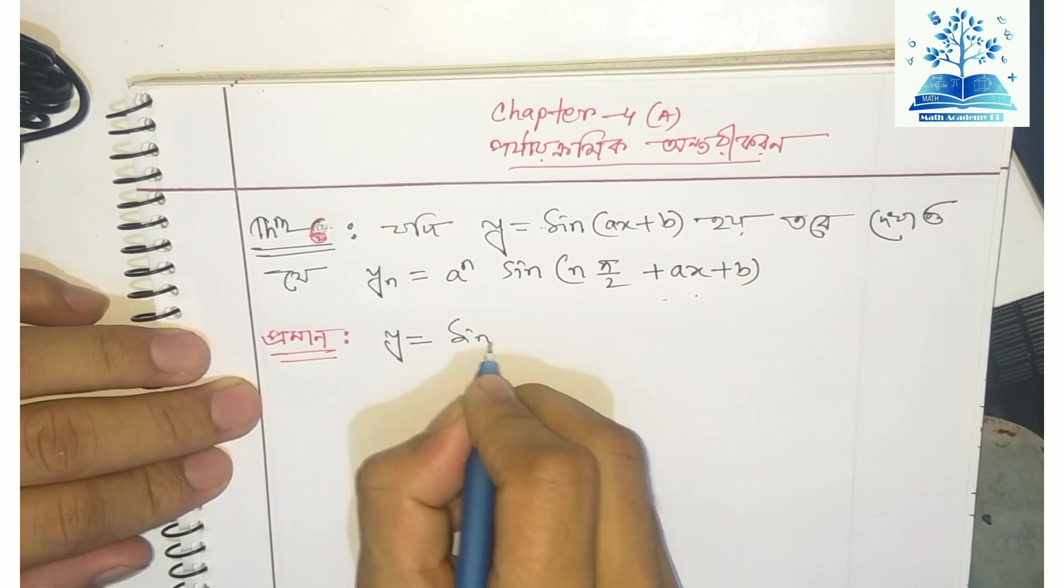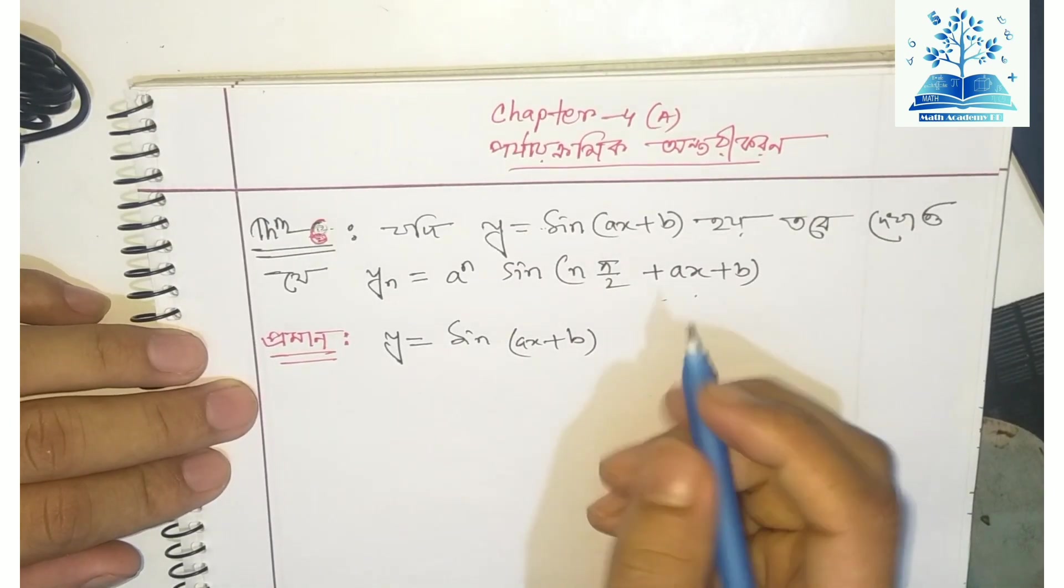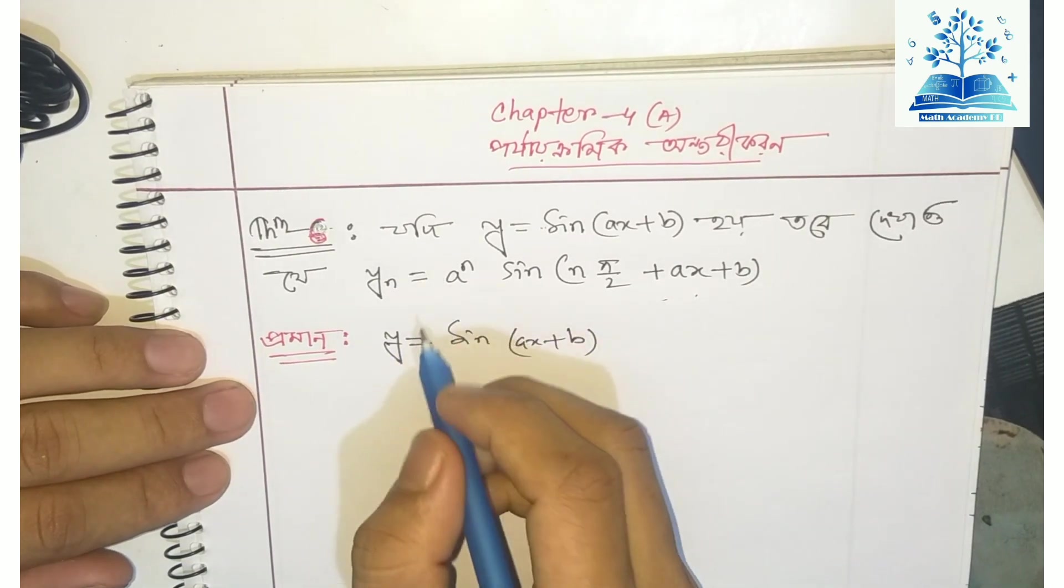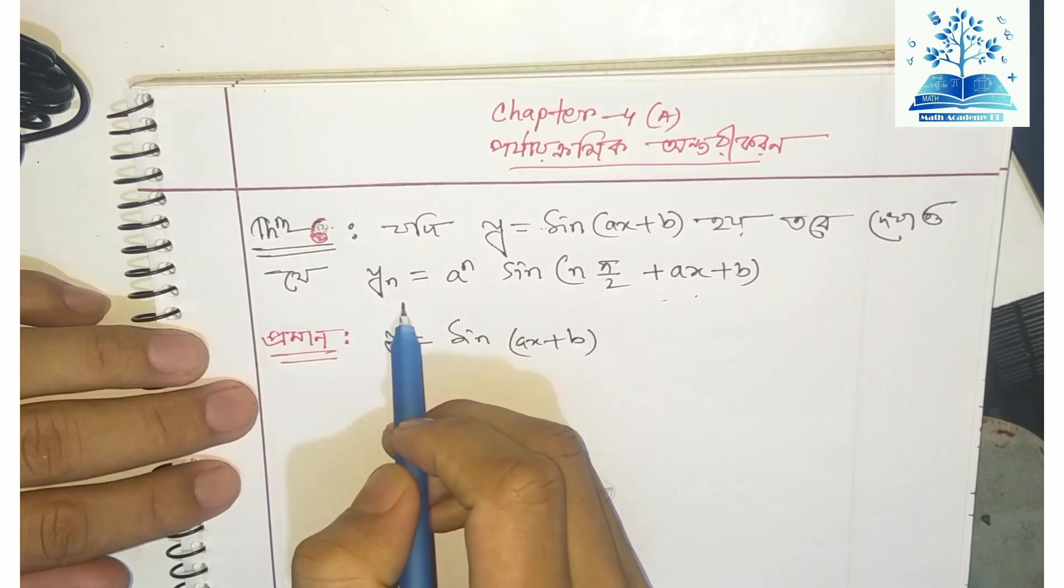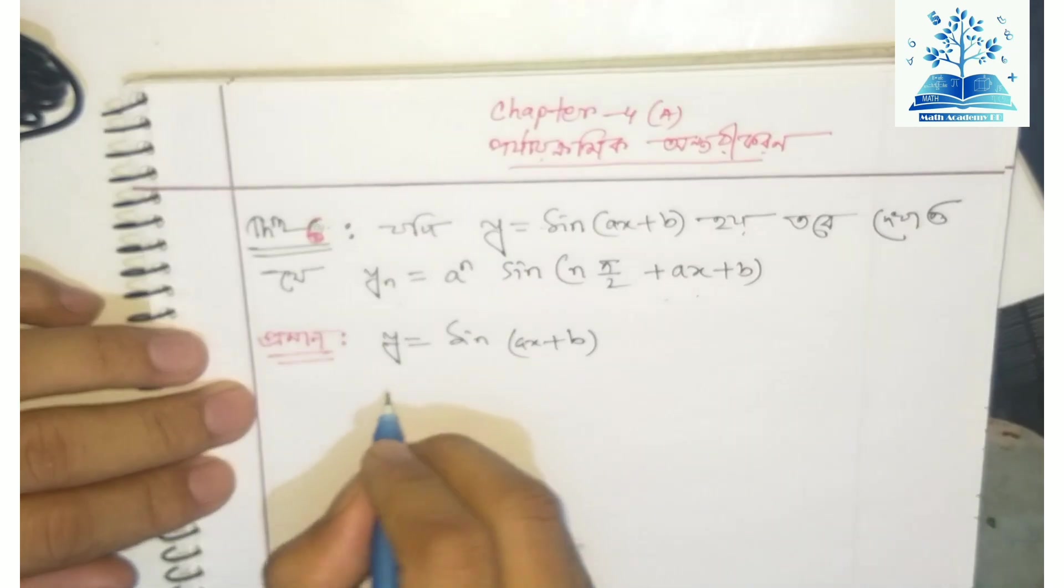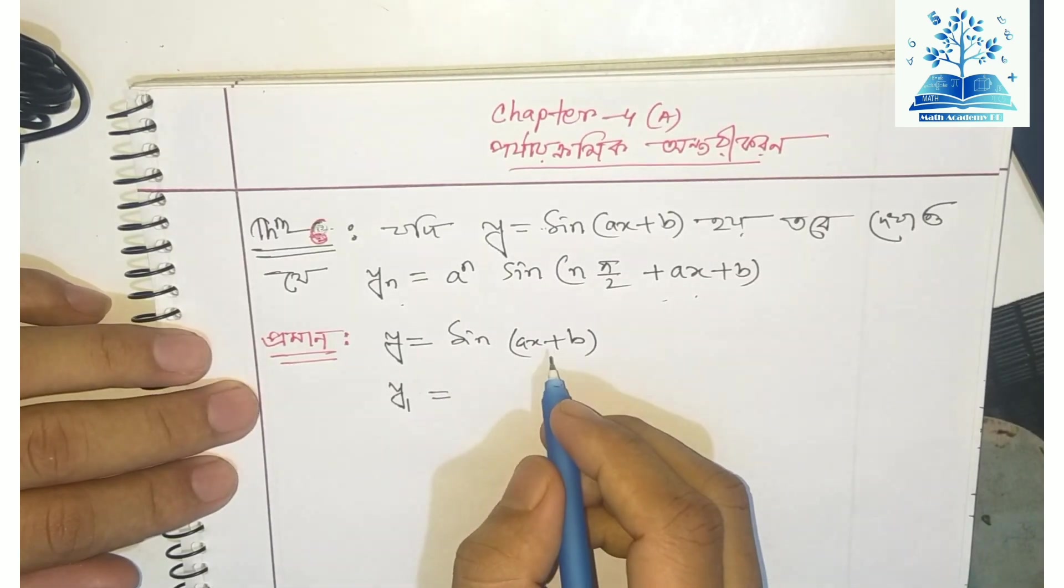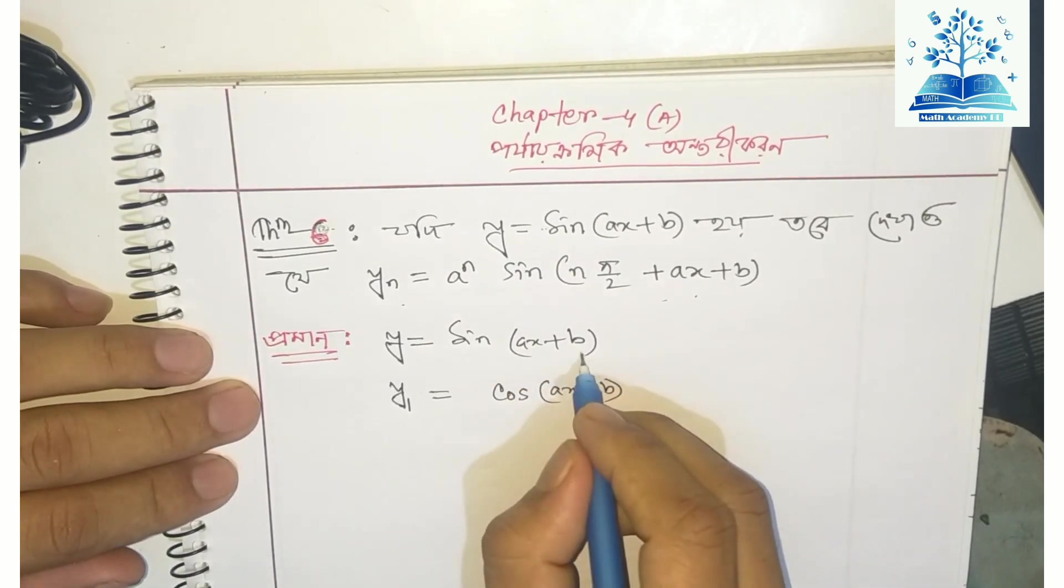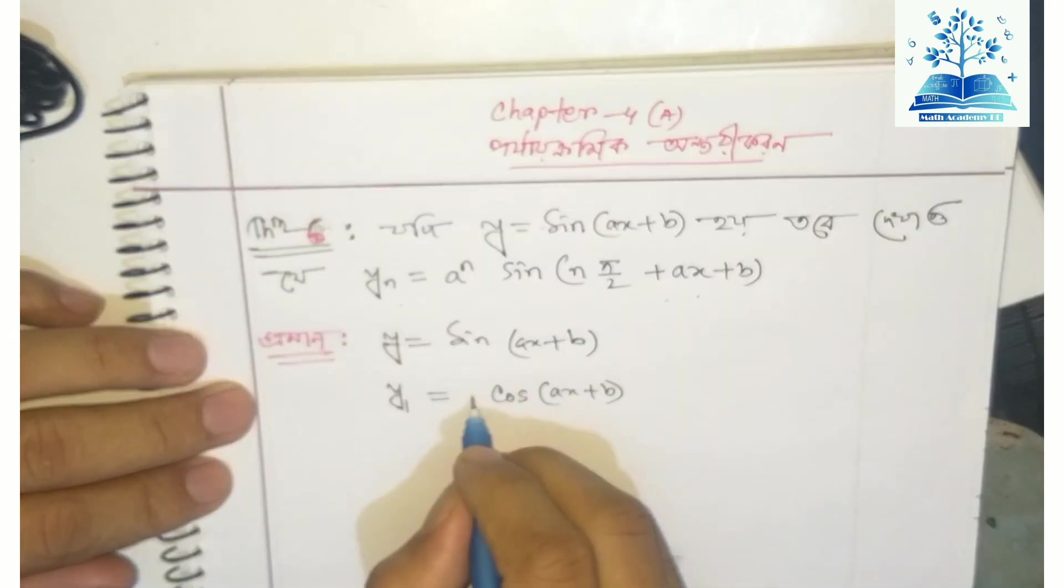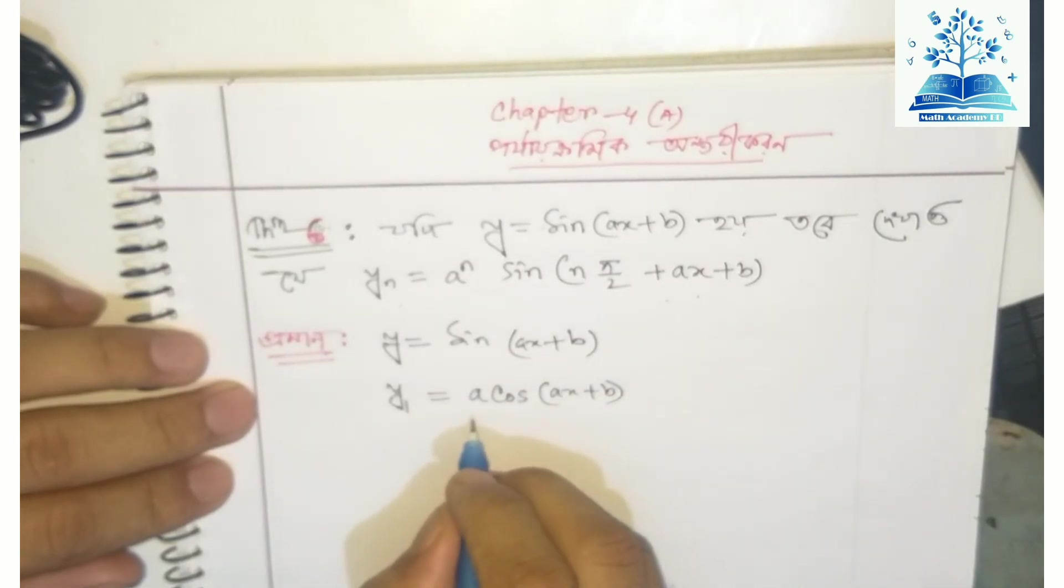For number three, I will show an important formula. First, y₁: y equals sin(x + b). When we differentiate, y₁ equals cos(x). When we take the derivative, we get cos(x).